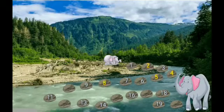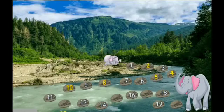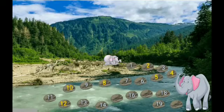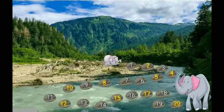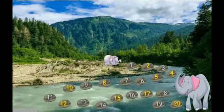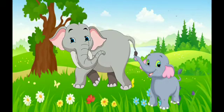Eight, nine, ten, eleven, twelve, thirteen, fourteen, fifteen, sixteen. Now which number is missing? Seventeen, eighteen, nineteen, and twenty. Yay! Baby Elephant reached Mama Elephant. Now both are together and both are very happy.